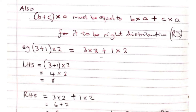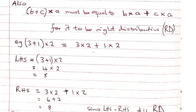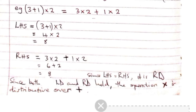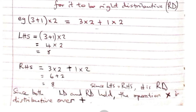Also, (3 plus 1) times 2 — simplifying the brackets first gives 4 times 2, which is 8. Right-hand side: 3 times 2 plus 1 times 2 gives 6 plus 2, which is 8, equal to the left-hand side. Since both left distributive and right distributive properties hold, the operation multiplication is distributive over plus.